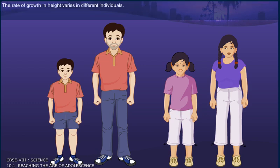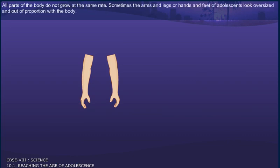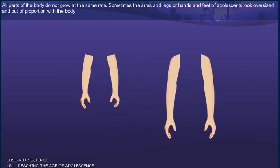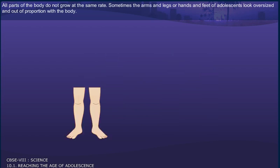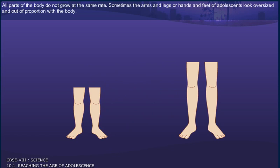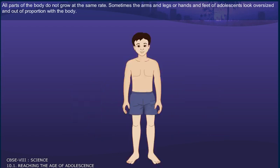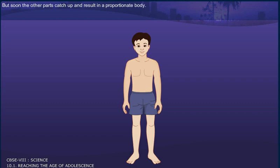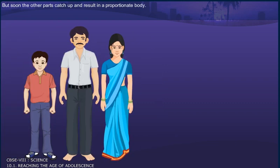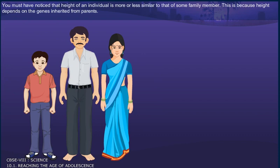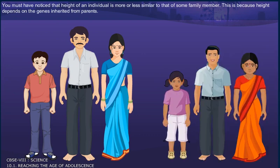The rate of growth in height varies in different individuals. All parts of the body do not grow at the same rate. Sometimes the arms and legs, or hands and feet, of adolescents look oversized and out of proportion with the body. But soon the other parts catch up and result in a proportionate body. You must have noticed that the height of an individual is more or less similar to that of some family member. This is because height depends on the genes inherited from the parents.